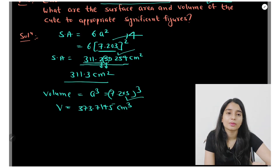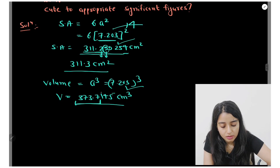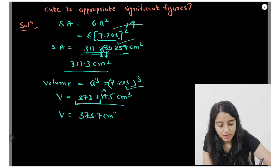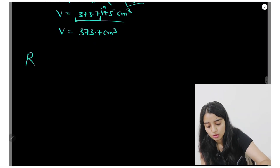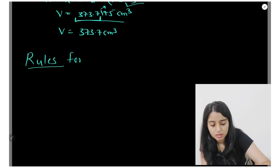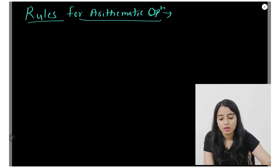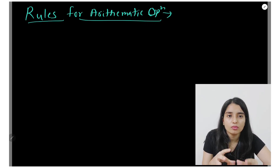To summarize: whenever we perform arithmetic operations — multiplication, division, subtraction — we must use rounding off to express the result to the correct number of significant figures.